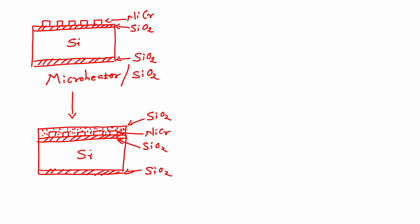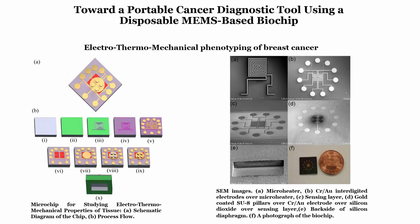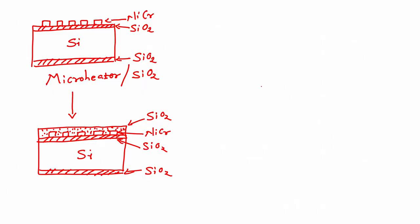We need to understand that there are contacts on the heater which need to remain accessible. So I have to keep those contacts open for accessing the heater when the biochip is ready. For that I have to remove or etch the silicon dioxide from the contact region.